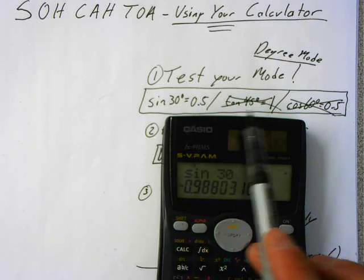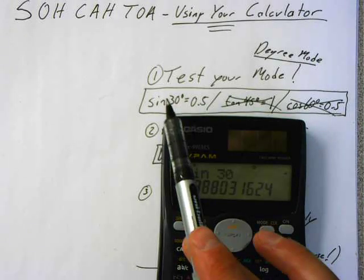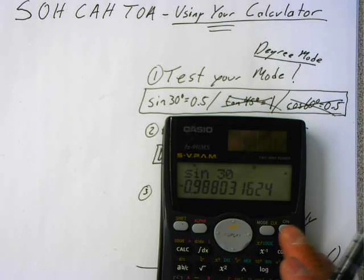Now, technically, you could test the tan of 45 equals 1 or the cos of 60 equals 0.5, but I usually just use the sine of 30. Those would be good to memorize, maybe for later, like grade 11.